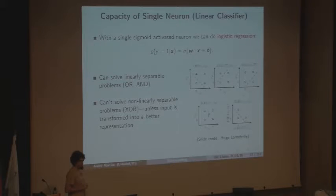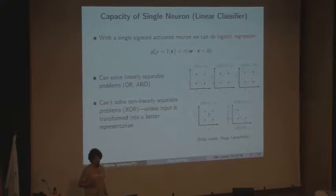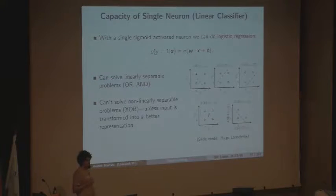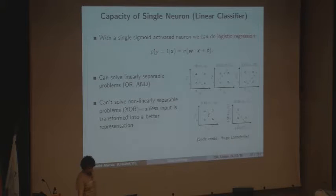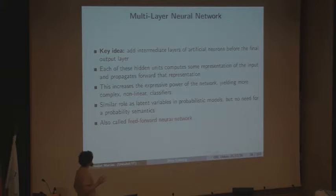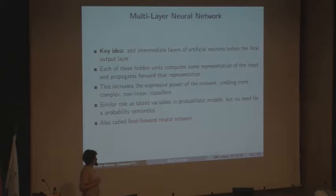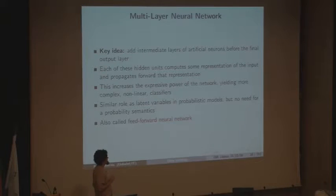We have seen before the break that a linear classifier, like a perceptron, can find a separating function if the data is linearly separable, but it cannot solve the XOR problem. This is a strong limitation of a single neuron. On the other hand, if you compose these units, we get what is called a multilayer neural network, which is going to have more representation power than just a linear classifier.